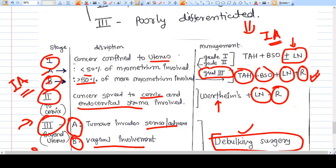In stage 1a only, radiotherapy is not there. Otherwise, every other stage has radiotherapy. Starting from stage 1b to stage 4, there is radiotherapy involved, and lymph node sampling is also involved.